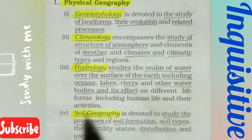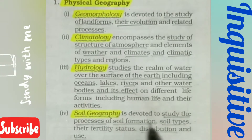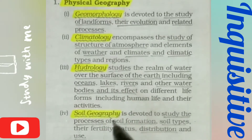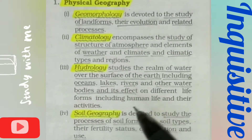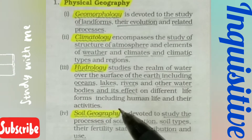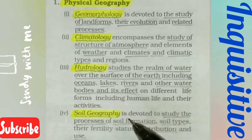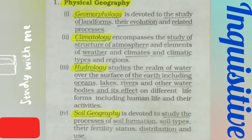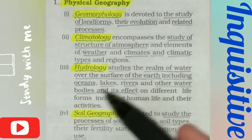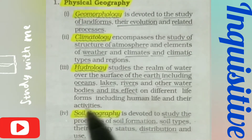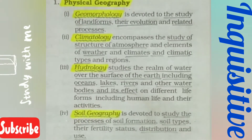Next is soil geography. Soil geography is the study of the processes of soil formation, soil types, their distribution, and their uses. This includes how soil is formed, how long it takes, what different types of soils exist, and what their uses are. All of this detailed study is done within soil geography.